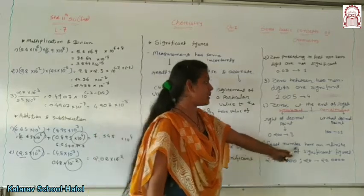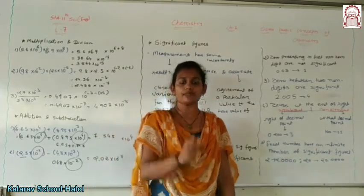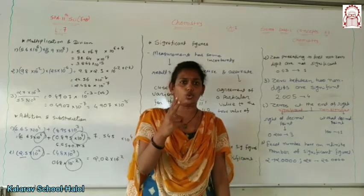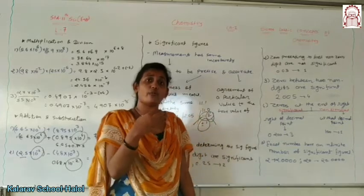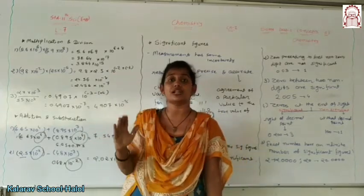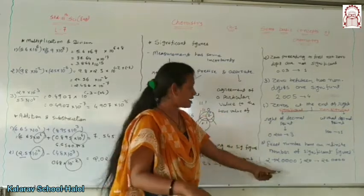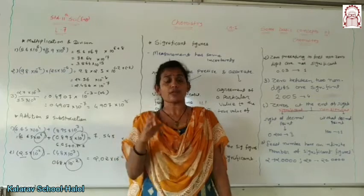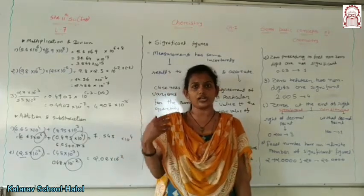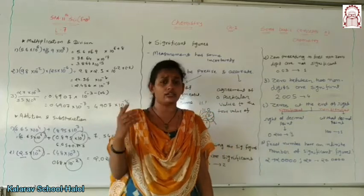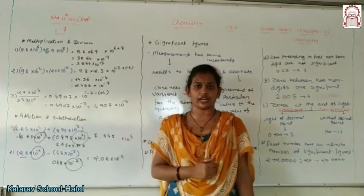The last point: exact numbers have an infinite number of significant figures. If you have an exact number like 2, it is 2.000000... with infinite zeros — so significant figures are infinite. Another example is 20: it is 20.0000... so significant figures are also infinite for an exact number.